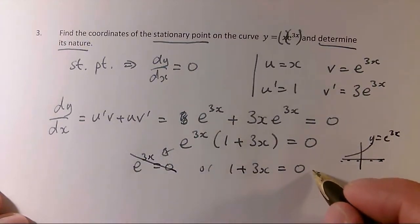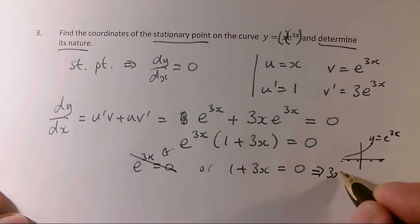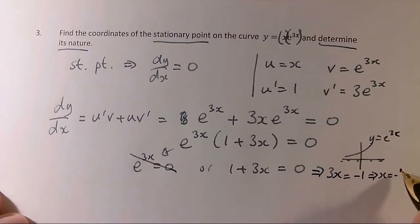1 plus 3x equals 0 is solved when 3x equals minus 1. So that's when x equals minus 1 third. So I've got the x-coordinate of the stationary point.